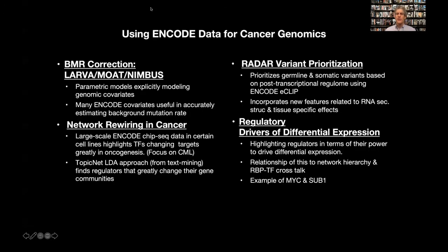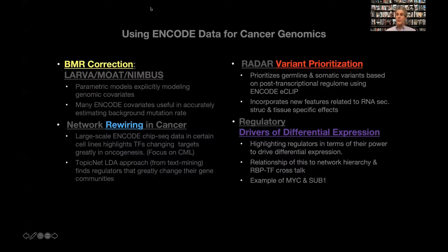I'm going to talk about using this data in four ways to look at cancer genomics: background mutation rate correction, studying network wiring, variant prioritization, and looking at drivers of differential expression.